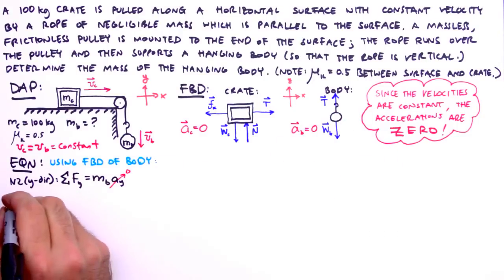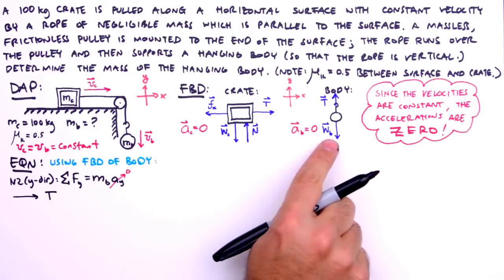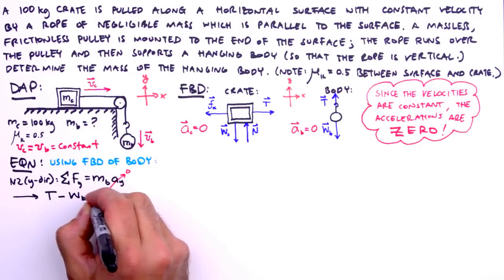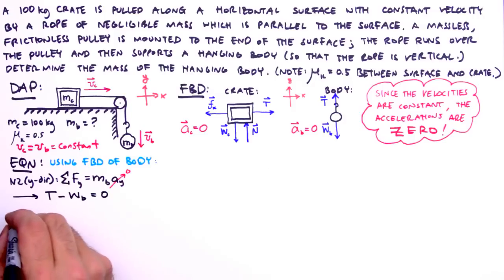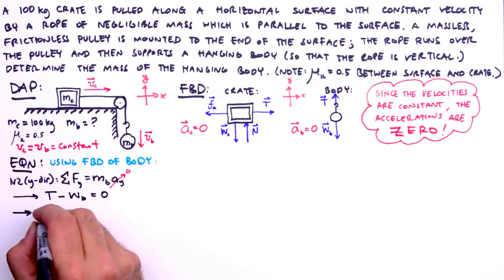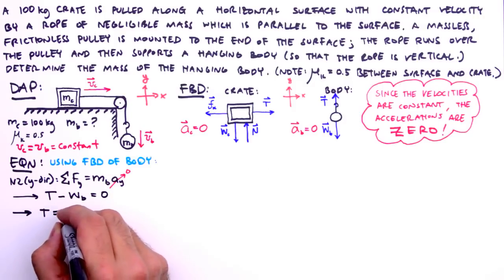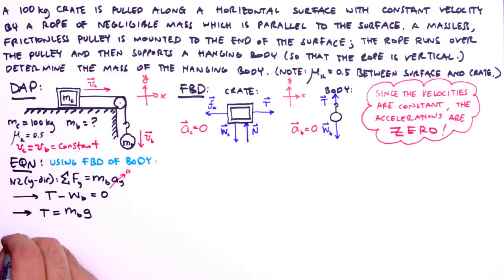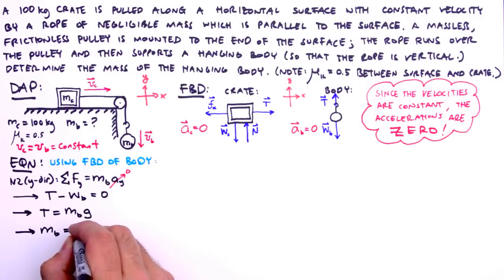Now we sum the forces along the y direction that are acting on the hanging body. In the positive y direction, we have the tension force. And in the negative y direction, we have the body's weight. Set that equal to zero. Adding the weight to both sides and substituting our definition for weight, we get t equals the product of m sub b and g. Solving for m sub b, the unknown quantity for which we're looking, we get m sub b equals t over g.